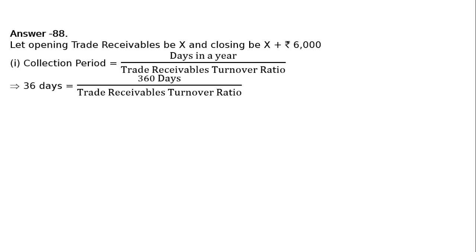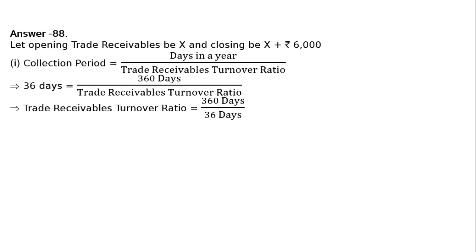Days in a year is taken as 360 days. These 5 days are compulsory holidays: Diwali, Holi, August 15th Independence Day, 26th January Republic Day, and October 2nd Gandhi Jayanti. Hence, 360 divided by trade receivables turnover ratio equals 36 days, which implies trade receivables turnover ratio equals 360 divided by 36, giving a debtors turnover ratio of 10 times.